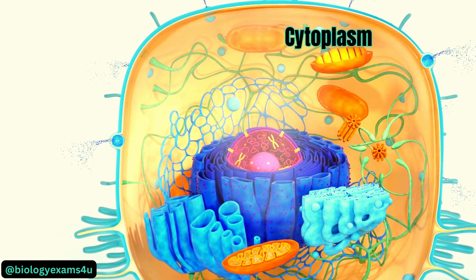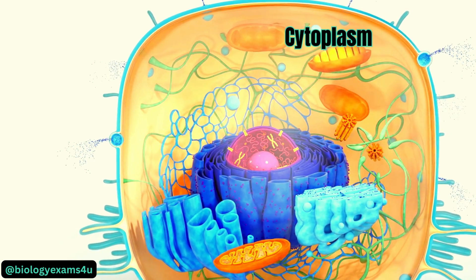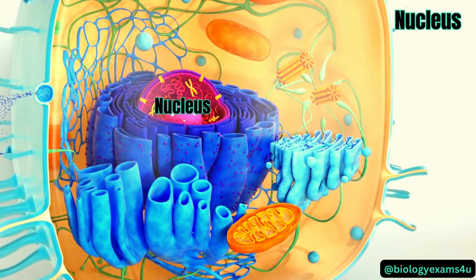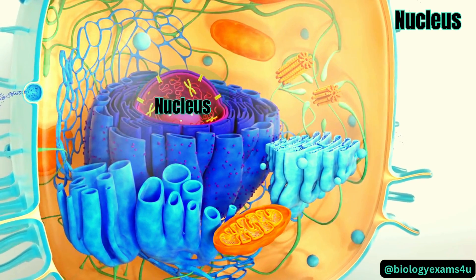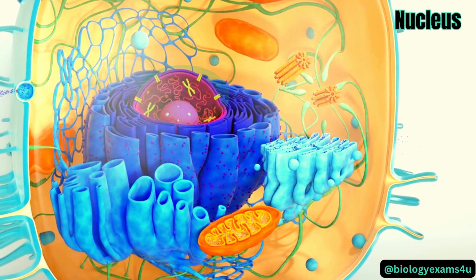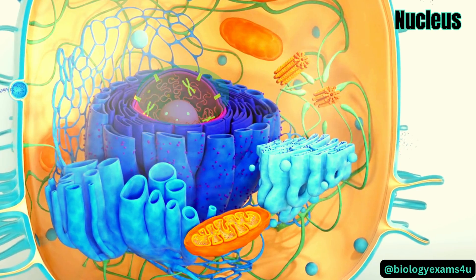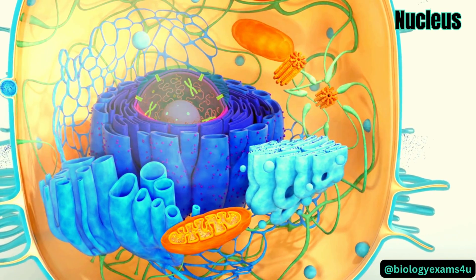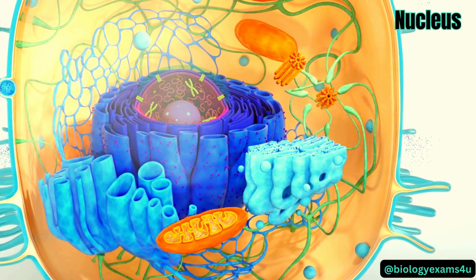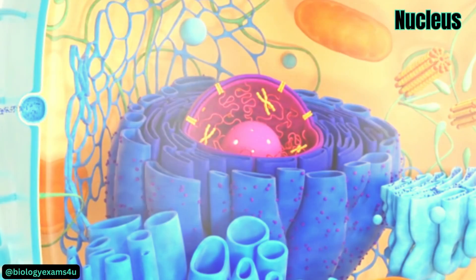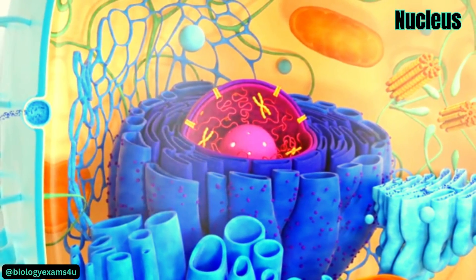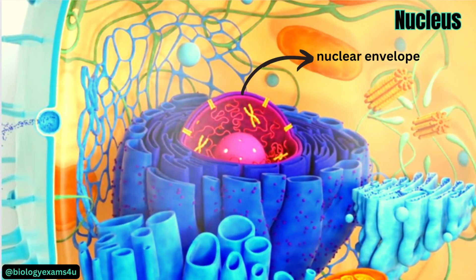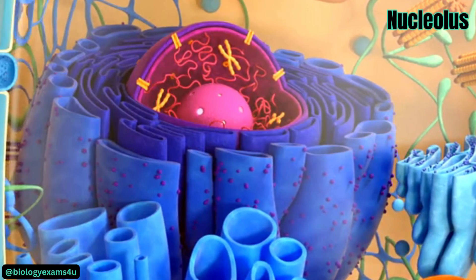Let us move to the center of the cell where the nucleus is located. The nucleus is a double membrane-bound organelle. It is the controlling center of the cell that contains the cell's DNA — the genetic material that contains the instructions for building proteins that regulate all cell activities. The nucleus is surrounded by a nuclear envelope, which is a double membrane that protects the DNA.